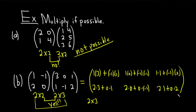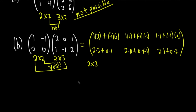Let's go over that one more time to make sure you got it. First row, first column: 1 times 3 plus negative 1 times 1. First row, second column: 1 times 0 plus negative 1 times negative 1. First row, third column: 1 times 1 plus negative 1 times 2. Second row, first column: 2 times 3 plus 0 times 1. Second row, second column: 2 times 0 plus 0 times negative 1. Second row, third column: 2 times 1 plus 0 times 2. It's a lot of work — this is why it's tough, and it just takes a lot of practice.